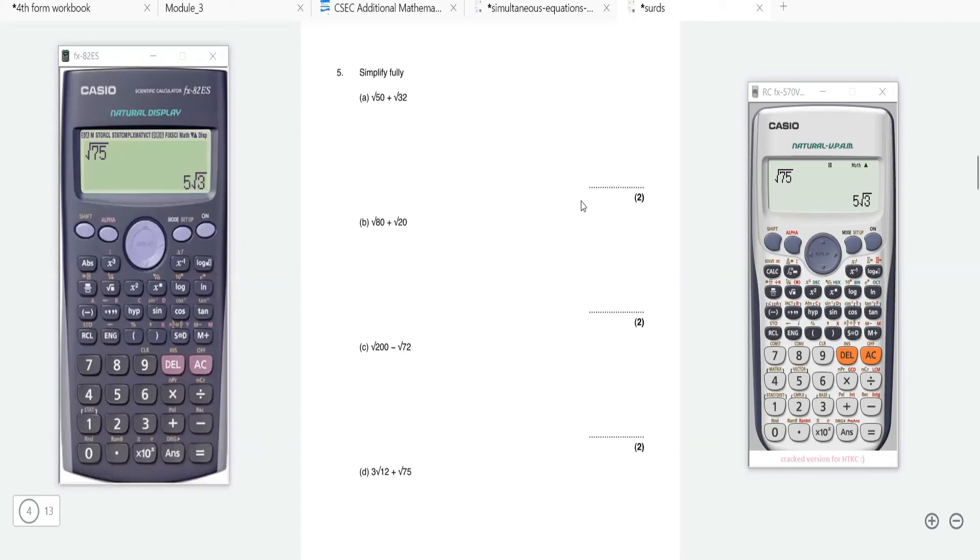Not only can it simplify expressions, but it can also simplify when you're adding two or more surd questions. For example, you're adding the square root of 50 plus the root of 32, it simplifies it for you. These are typical exam questions you'll see on Additional Math.